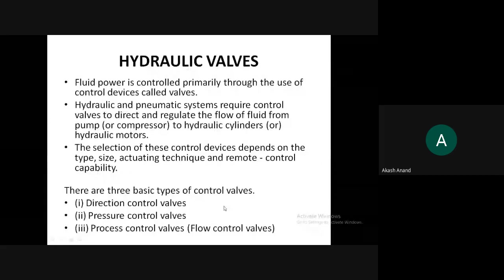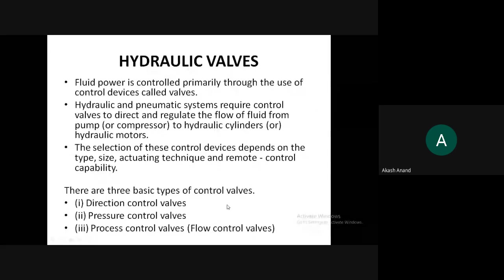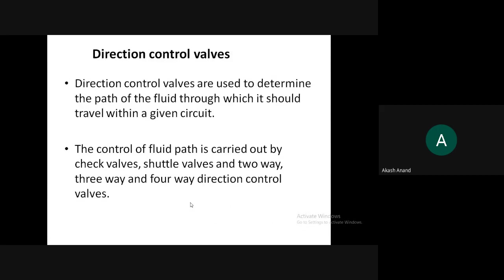Pressure control valves control the pressure of the working substance — in hydraulic circuits the liquid pressure is controlled, and in pneumatic circuits the pressure of compressed air is controlled. Flow control valves, also known as process control valves, are used for flow control — that is, the volume flow rate or mass flow rate of the working substance, whether liquid or compressed air.